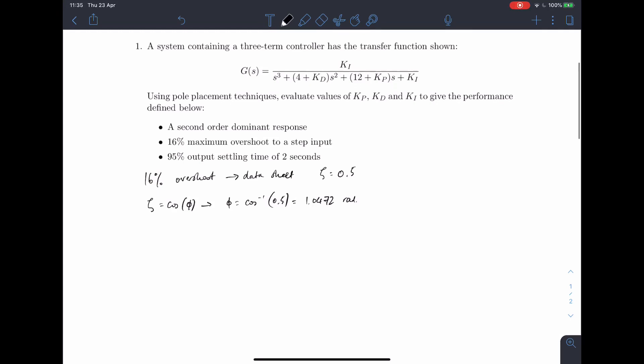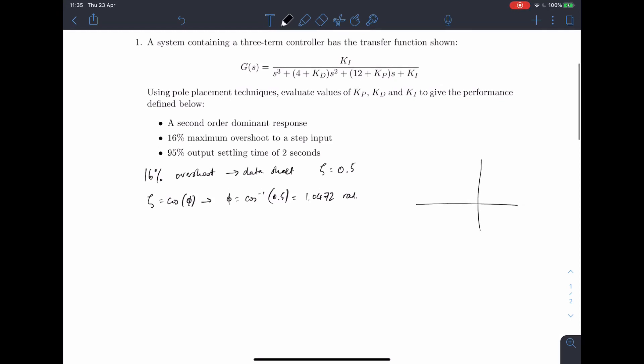So we know that if we're plotting this on the S plane, this is our sigma, this is our imaginary, so omega d j. And we know that our points, second order dominant means that we have points here and here.